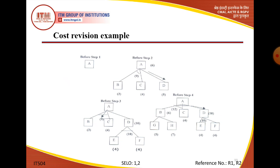B की cost 3, C की 4, D की 5। 3 plus 4 = 7, 1 plus 1 मिलाके 9। D की value already 10 निकली — already A पर before step two में 9 थी। हम इसके साथ move करेंगे क्योंकि value 9 कम दिख रही है। B में 3 minimum value है तो B के children expand करेंगे — G और H निकले; G की value 5, H की value 7।